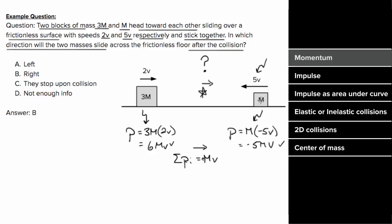The only way that could be the case, if these two masses join together, is for the total combined mass to also move to the right.